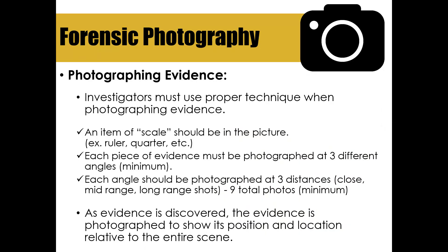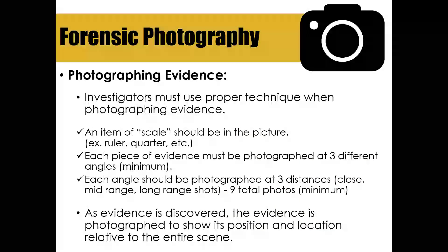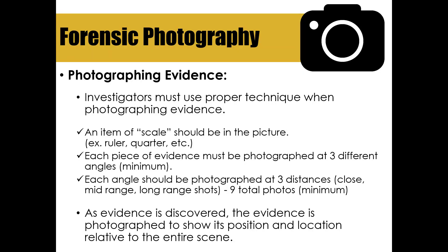Each piece of evidence has to be photographed at a minimum of three different angles. Each angle also has to be photographed at three distances — a close shot, a mid-range shot, and a far-off long-range shot. That means a minimum of nine total photographs per piece of evidence. Investigators generally take far more than nine, but nine is the minimum. As evidence is discovered, it is photographed to show its position and location relative to the crime scene.